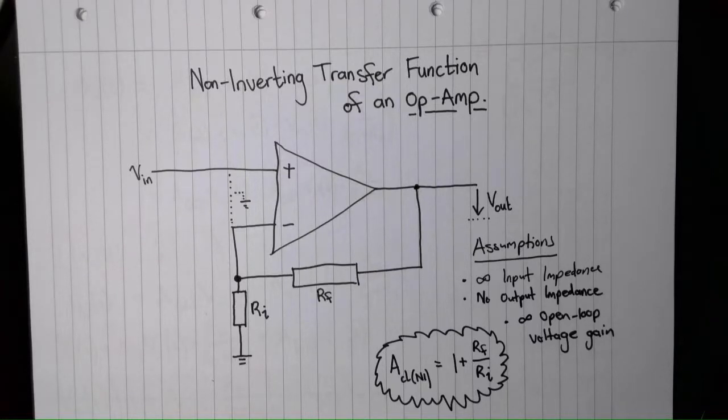Before we begin, we need to make some assumptions about the behavior of an op-amp in this configuration. These assumptions model the ideal characteristics of an op-amp. The most important one is this first one, infinite input impedance.